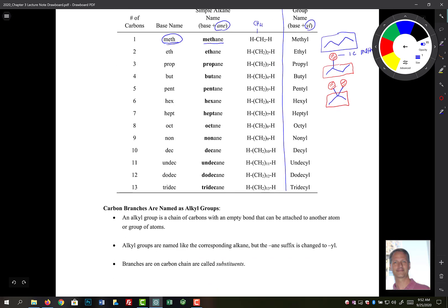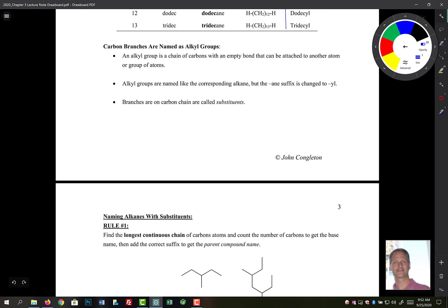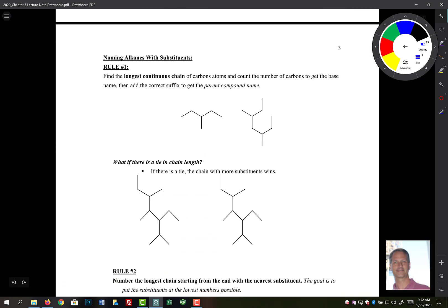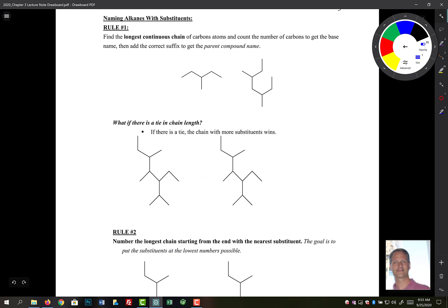So if we have two methyls, we call them dimethyls. So pretty straightforward, but that's kind of the idea there. Now, let's practice some examples. There's going to be some rules here.